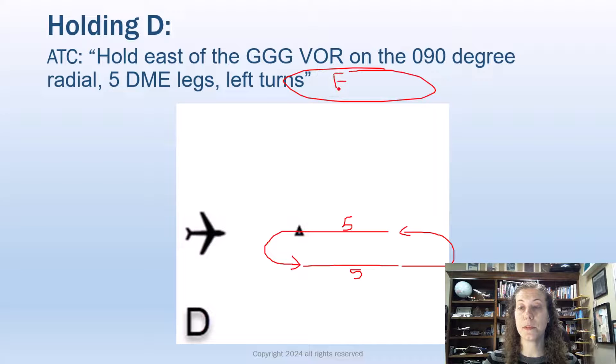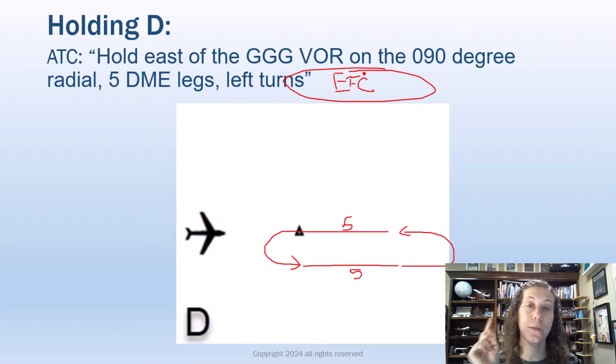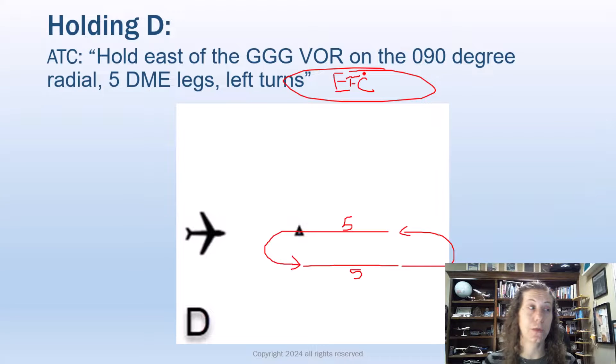They didn't give me my EFC. So I'm a good instrument pilot. I'm going to ask ATC for an expect further clearance before I accept this hold clearance. We need that expect further clearance. Okay, back to the holding pattern and figuring out our entry though, once I've got my expect further clearance.